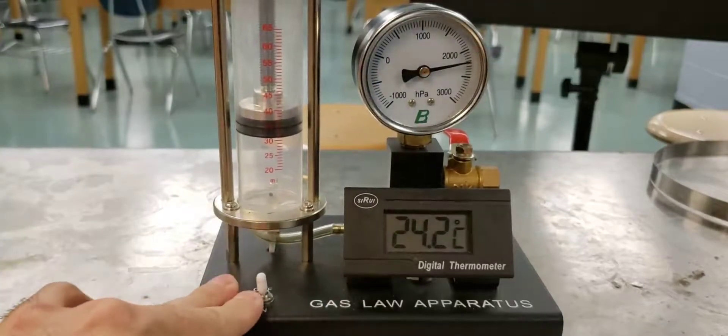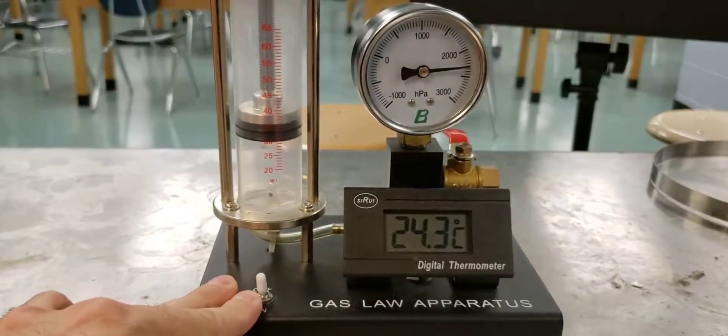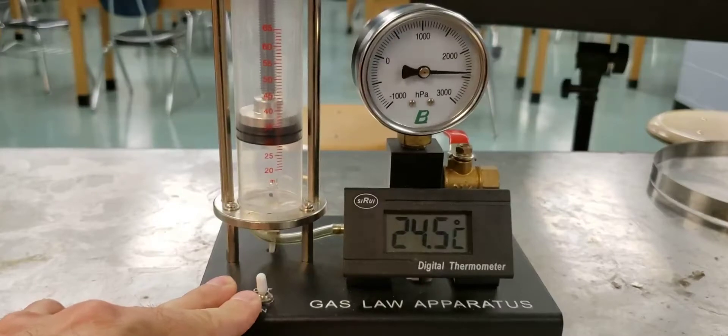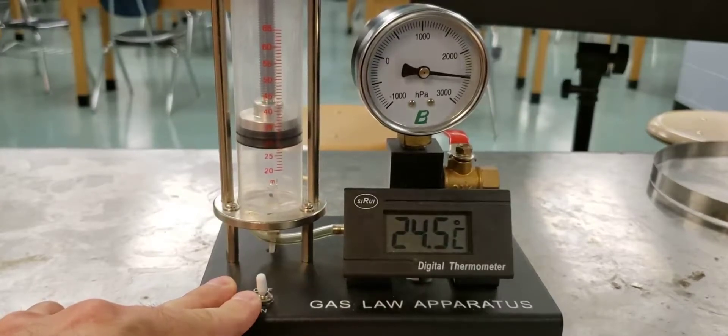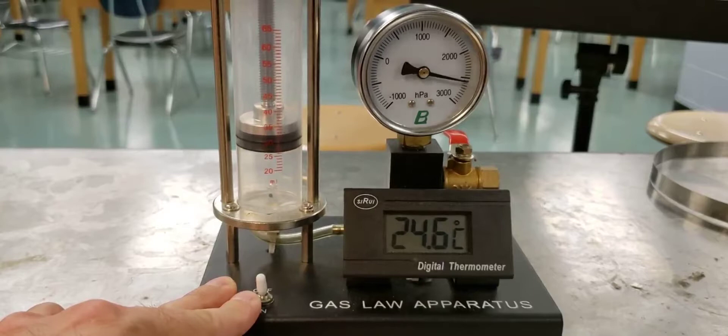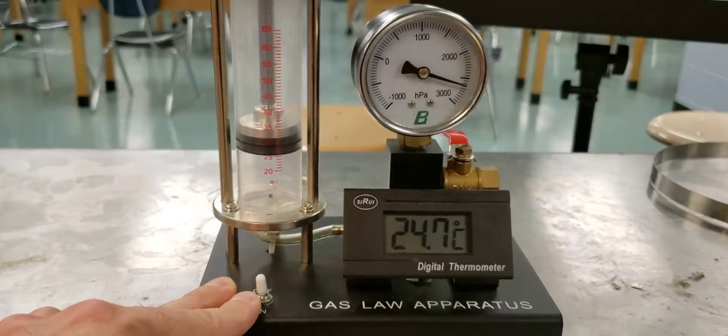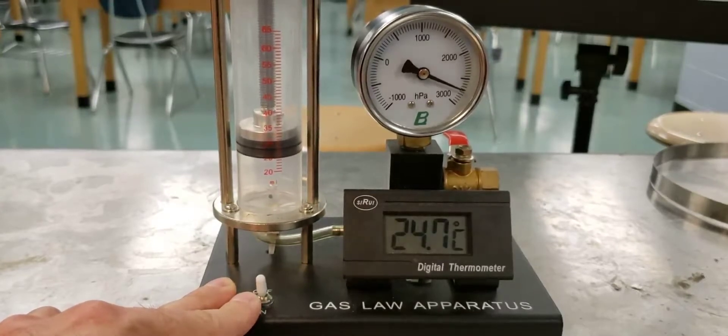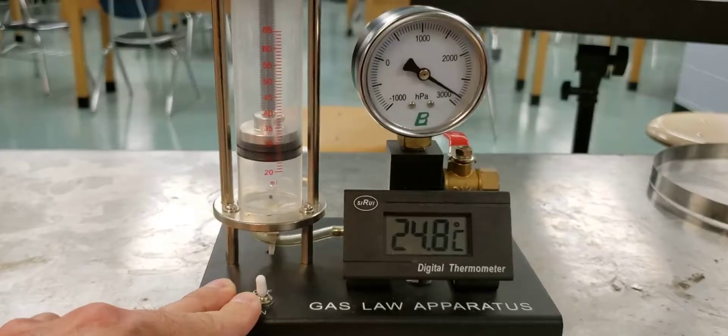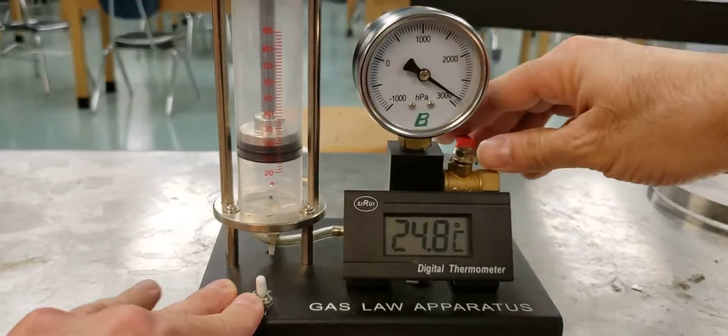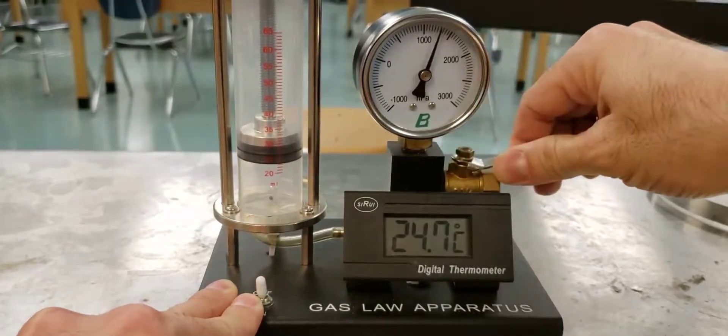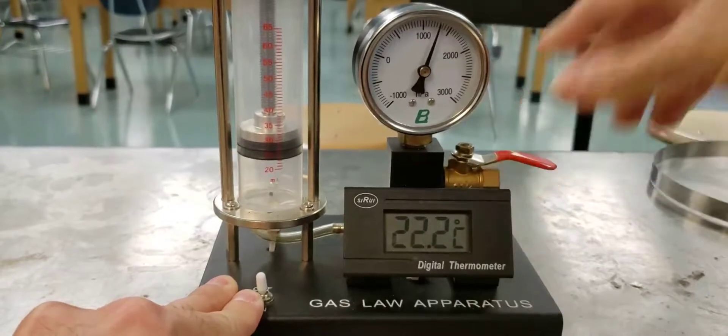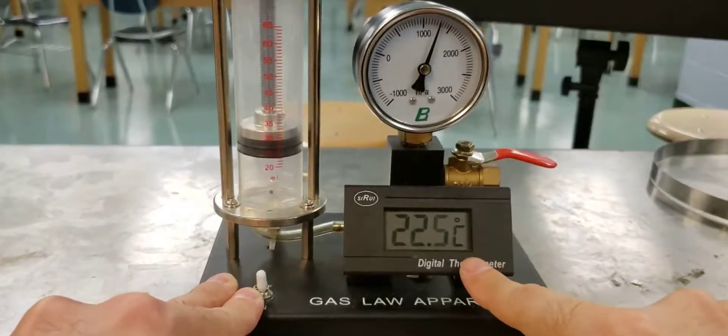This is actually how an air conditioner and refrigerator work. You have the gas get compressed in the back part, like the part of the air conditioner outside the window or the back of the refrigerator. Now check this out. Watch the temperature when I let the gas go to lower pressure. Ready? Watch the temperature right now. Did you see how much the temperature just dropped with the pressure?